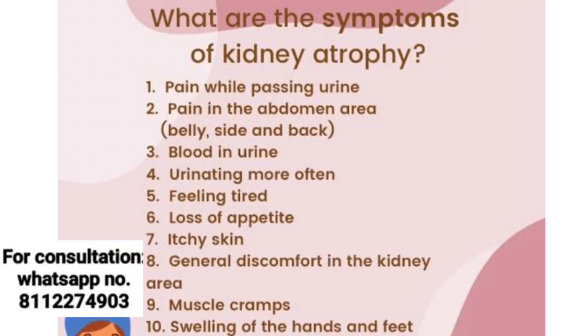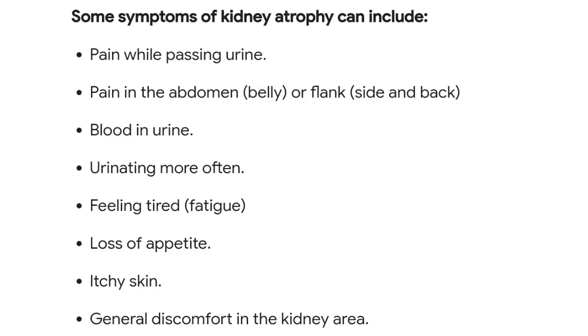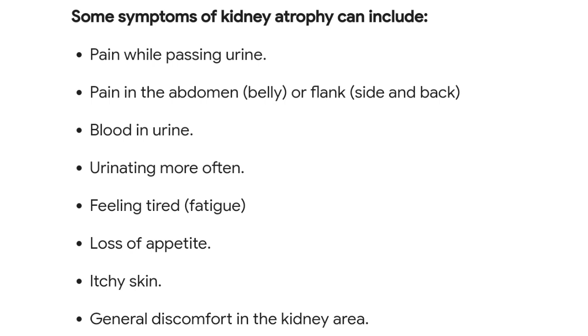If a person has kidney atrophy, they will show you these symptoms. The first important symptom is that the person's urination frequency has a lot of changes. The person's skin is dark, they have drowsiness, a lot of sleepy type of feeling, and this person has itchiness in the skin.